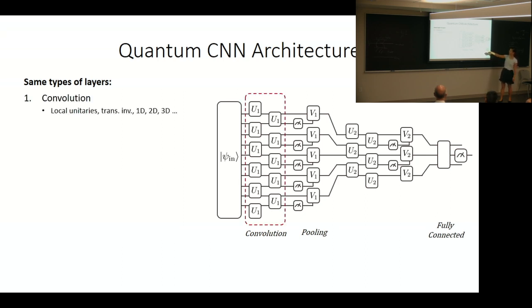The convolution layers now form local unitaries in translation-invariant ways. The same unitary is performed on all nearest neighbor pairs. Your input state is some quantum state. While I'm illustrating this for 1D for simplicity, it could be any 2D or 3D state.